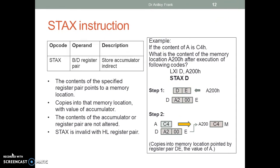STAX: store accumulator indirect. The content of the specified register pair points to a memory location, and the value of the accumulator is copied into that memory location. The content of the accumulator or register pair are not altered. STAX is invalid with the HL register pair. Example: if the content of A is C4, what is the content of memory location A200 after execution? Step 1: the value A200 is copied to register pair DE. Step 2: STAX D copies into the memory location pointed by register pair DE the value of A.